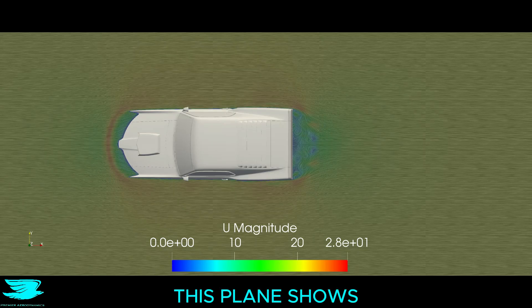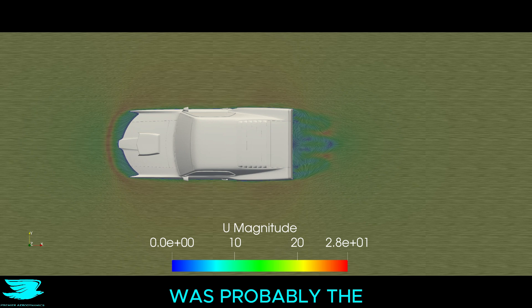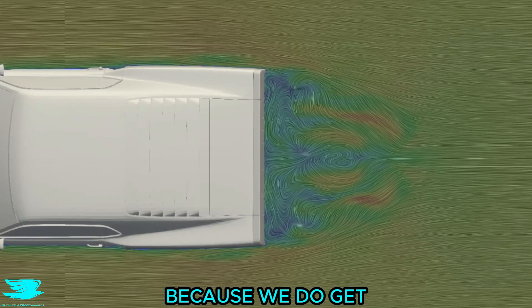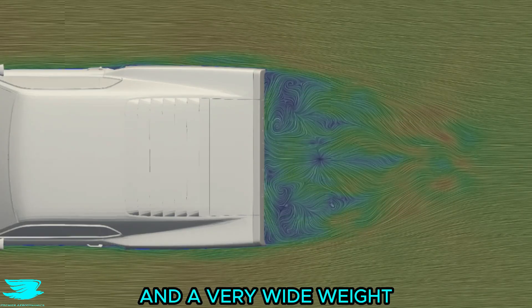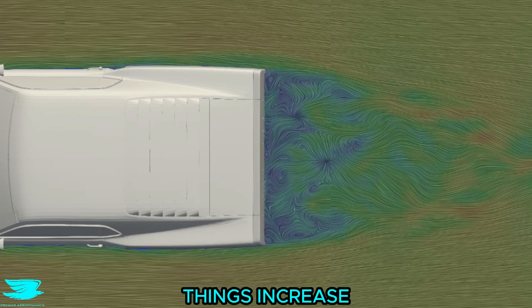If we move a little lower, this plane shows that the rear styling of the car was probably the least aerodynamic feature because we do get a lot of vortices here, as well as a very wide wake. Both of these things increase the drag.